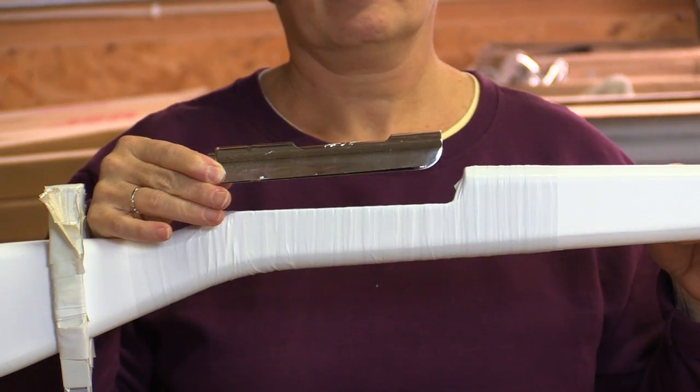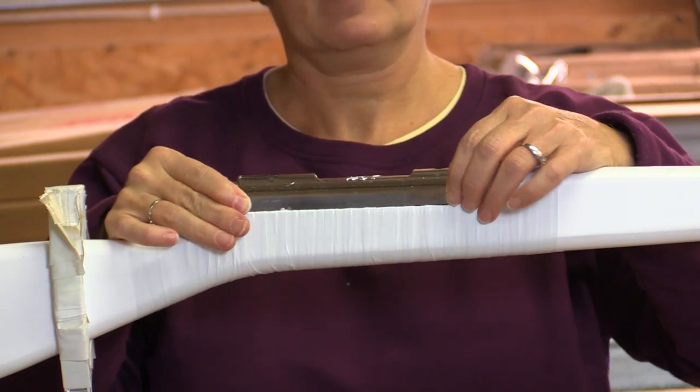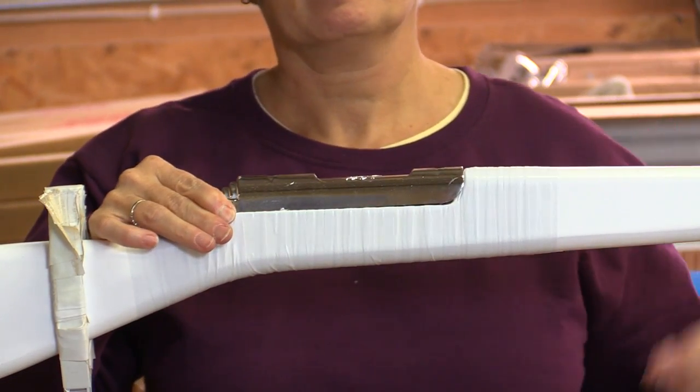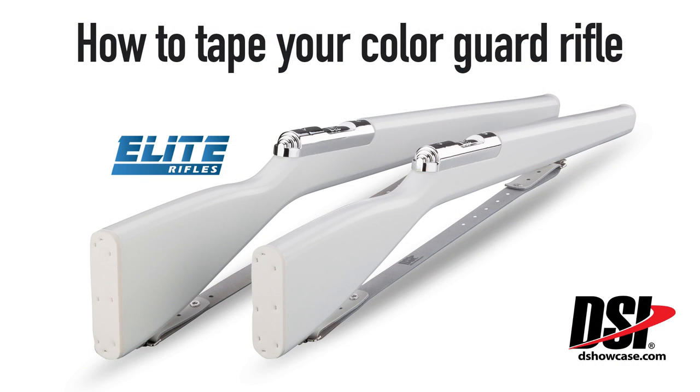And finally, you can reattach your bolt to your Elite rifle. Thank you for watching this presentation on how to tape your color guard rifle. To pick up your taped or untaped Elite rifle, contact any authorized DSI retailer.